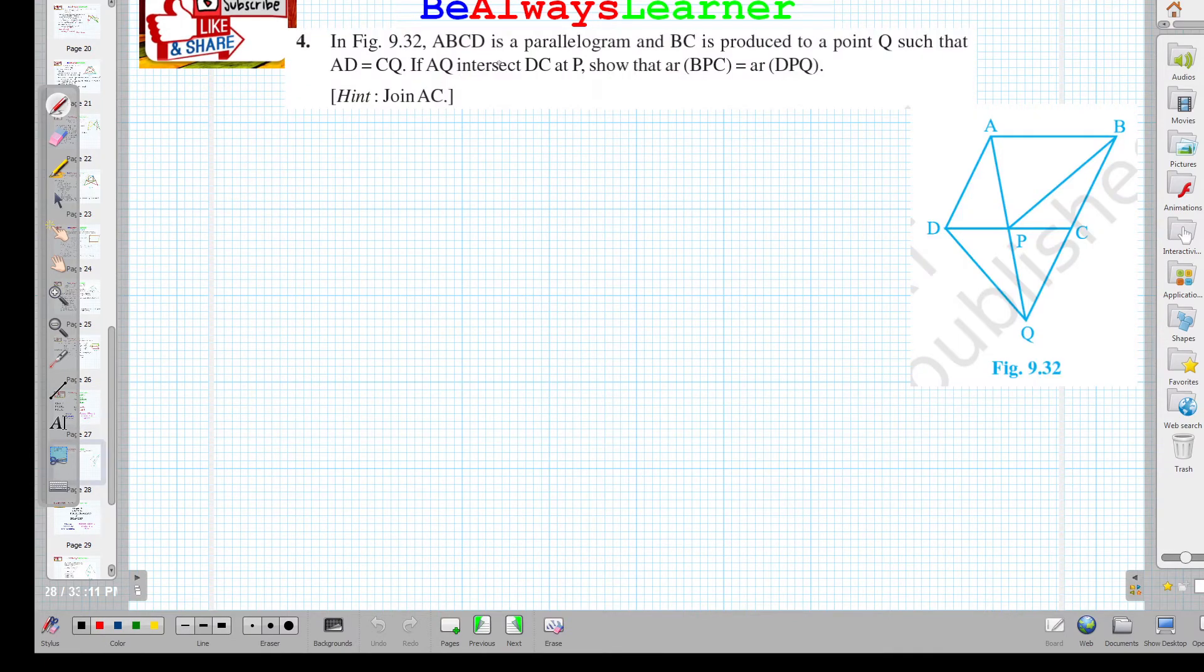In figure 9.32, ABCD is a parallelogram. ABCD means the yellow quadrilateral A, B, C, D. This is a parallelogram.